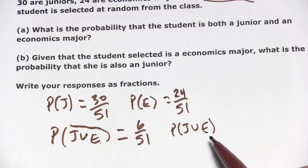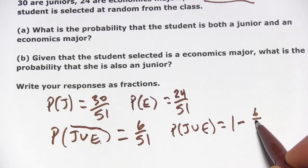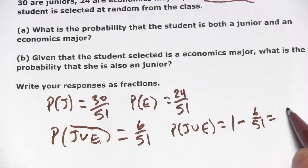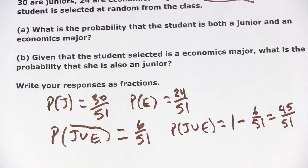that is being one or the other or both, is 1 minus 6 51sts. So that's going to be 45 51sts. Alright, I think we have everything we need now.